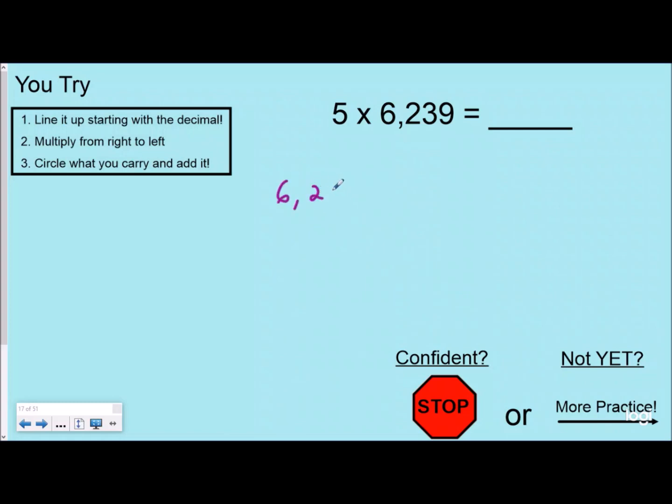So I have 6,239 that I'm going to put on top, and I'm going to multiply that times 5. So I want to line my place values up. I'm going to go from right to left, so 5 times 9 is 45. It's so important that you know your basic facts. Regroup my 4.